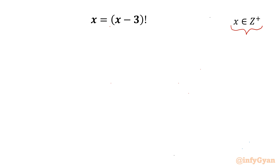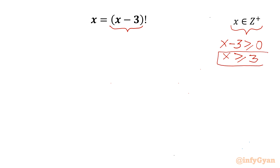Let's get started by considering that x minus 3 will be a non-negative integer, so x minus 3 must be greater than or equal to 0, which means x should be greater than or equal to 3. This is our condition on x. Let me write our equation: x equals (x-3)!.